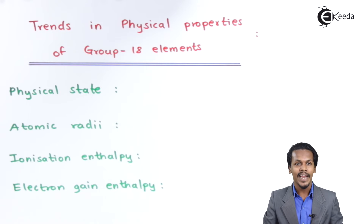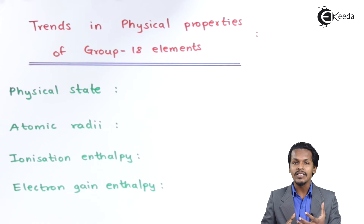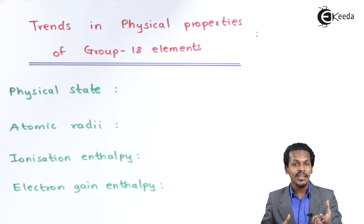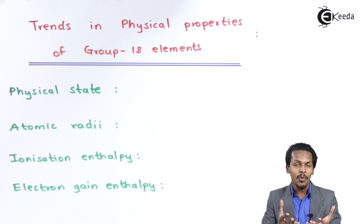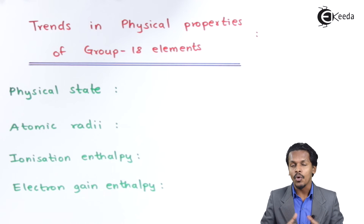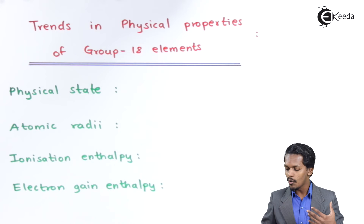Regarding ionization enthalpy: these are very stable gas molecules, so removing an electron from their outermost shell is very difficult. Compared to the halogen series, it is much harder to remove an electron from noble gas elements. Because of their stable electronic configuration and increasing atomic size, ionization enthalpy decreases from helium to radon as we move down the group.